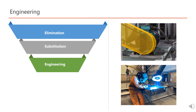The third level is Engineering Controls. This involves designing the workplace or equipment to make it safer, such as installing guards on machinery. Engineering controls are effective in reducing the risk of harm, but they may not completely eliminate the hazard. Examples include using guards around moving parts of machinery, and using local exhaust or general dilution ventilation to remove or reduce airborne products.